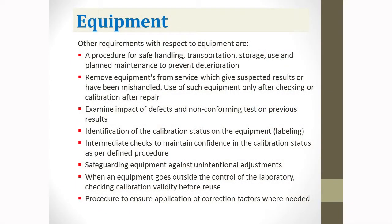You need a procedure for safe handling, transportation, storage, use, and planned maintenance of equipment to prevent deterioration. Equipment that is not functioning or needs service must be removed from use or clearly labeled. ISO 17025 is strict: label or mark it, ideally remove it from the laboratory. Calibration status must be identified and labeled on the equipment, and when equipment goes outside laboratory control and returns, calibration must be rechecked.